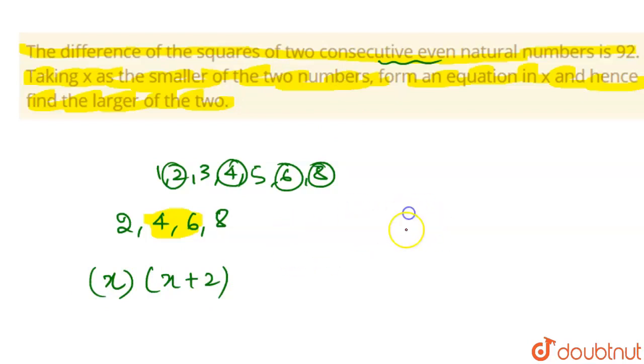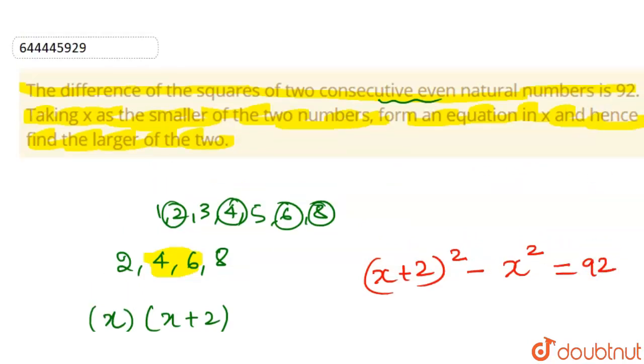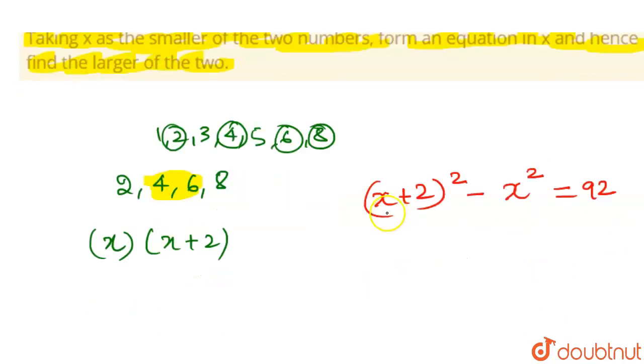We will write here (x+2)² - x² = 92. That is given in the question, that the difference of two consecutive natural numbers will be 92. Since the result is positive, we have to put the highest term at first position.